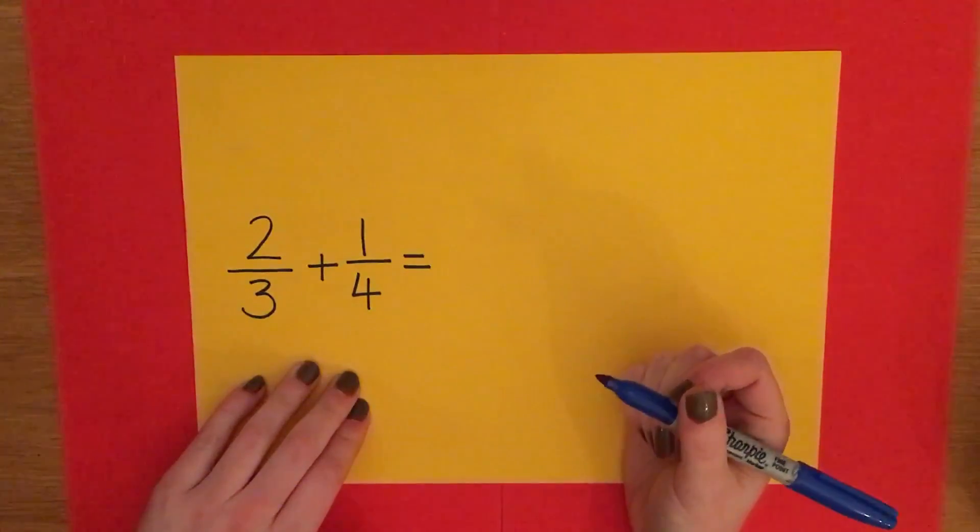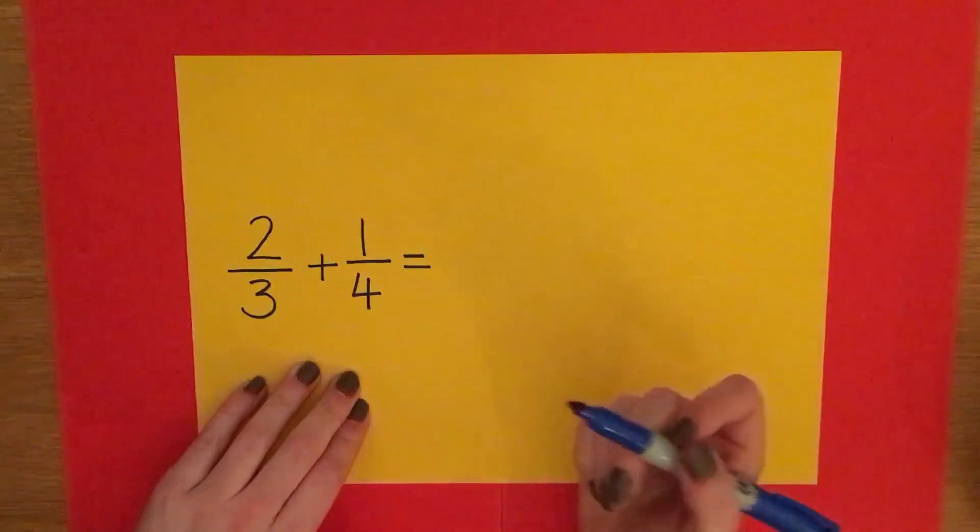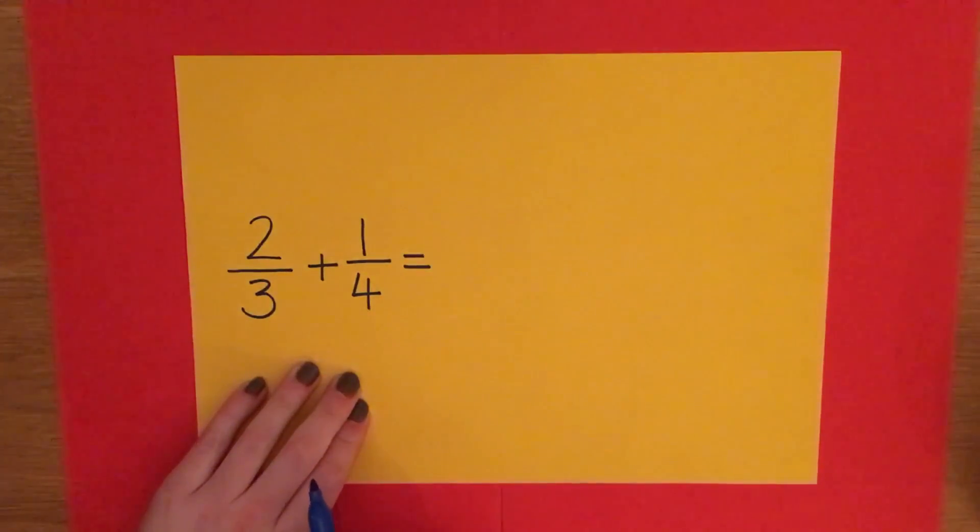We are going to be adding fractions today as requested by George, and as you can see these fractions have different denominators which makes adding slightly harder. Now we have two thirds adding on to one quarter today.